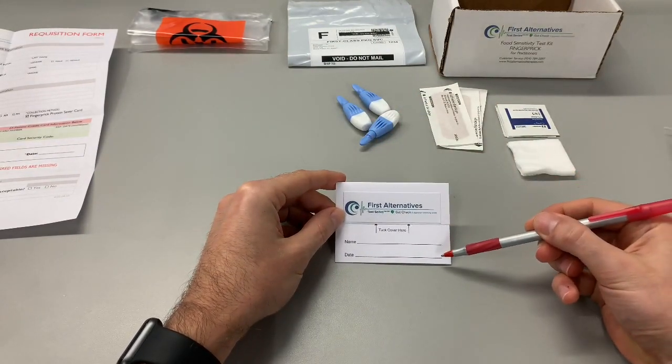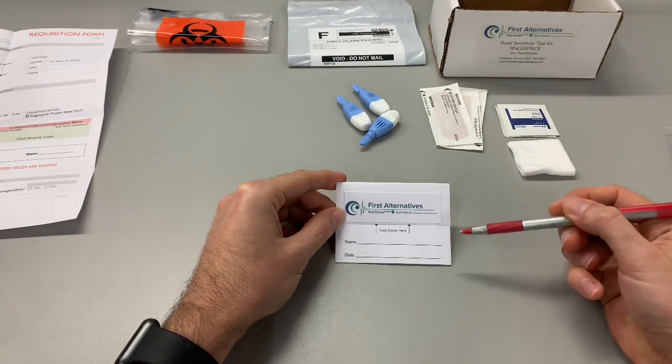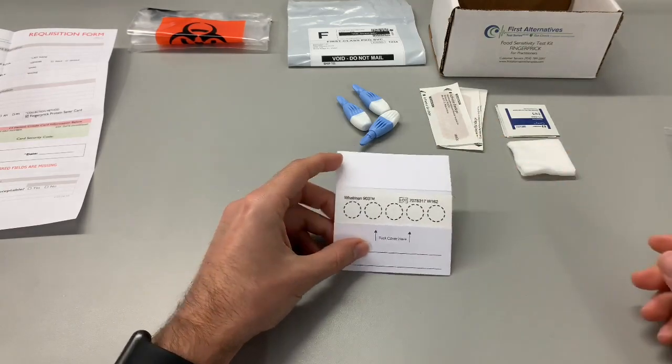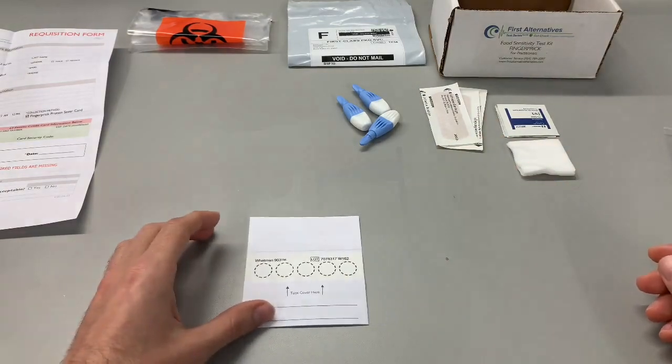Please write your name and date of collection on the protein saver card. Open the flap so that the five circles are exposed. Avoid touching the five circles.